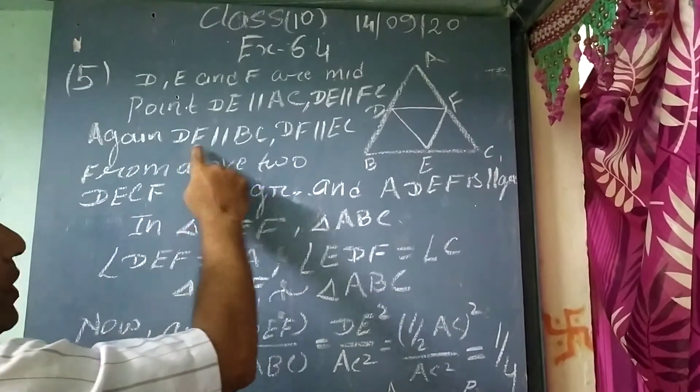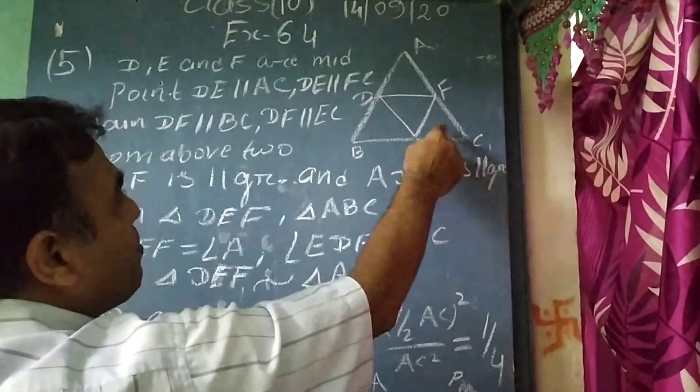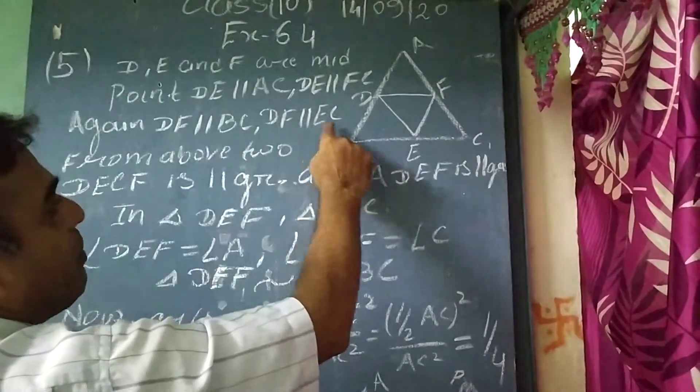Again, DF is parallel to BC, so it is parallel to EC. So DF is parallel to EC.